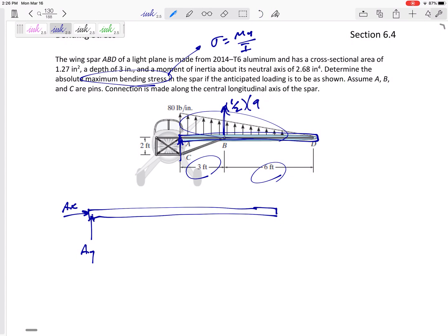This would be one half base times height. Let me look at these units here though - the base is 9 feet but the height is 80 pounds per inch, so I need to convert feet and inches. I think that would give me pounds, so 4320 right here. If I've got 4320, and then here I've got force C.